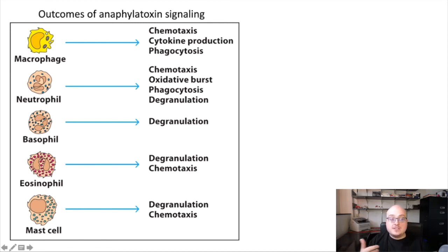And these granules are full of all sorts of effector proteins like cytotoxic proteins, which kill their target cells, and other proteins which regulate other immune cells like T cells. But this process by which a granulocyte becomes activated and releases its granules is called degranulation. So a major outcome of anaphylatoxin signaling is the degranulation of granulocytes.